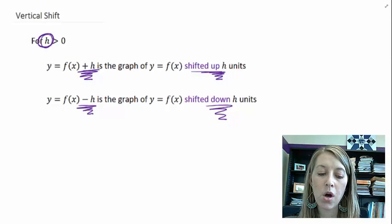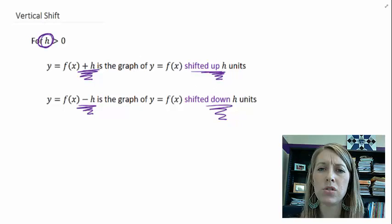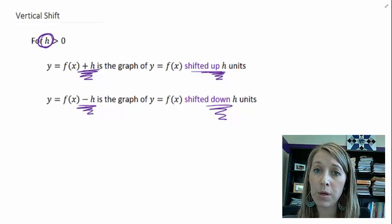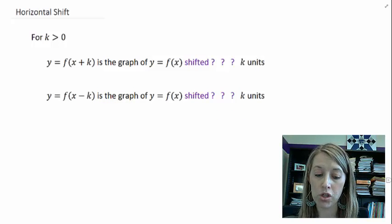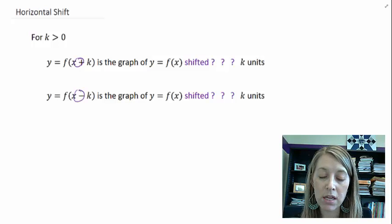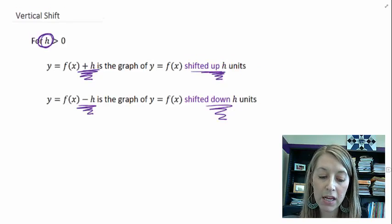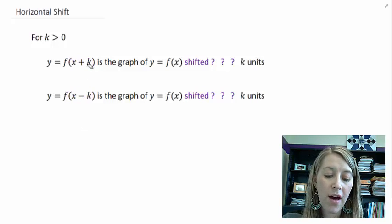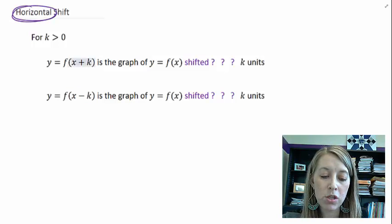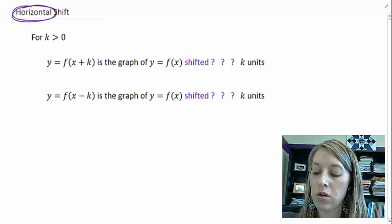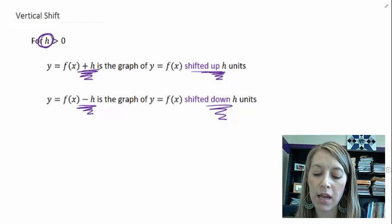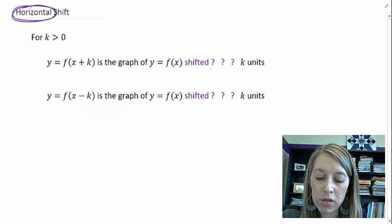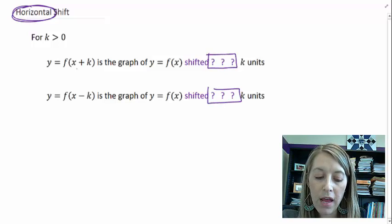Now, moving on to the horizontal shift. If adding or subtracting h outside the function shifts it up and down, how do we shift horizontally? It's still going to be addition and subtraction, but it's in a different location — inside the function. h was outside of f(x); here, k is inside f(x). So if we're adding and subtracting on the inside, that affects things horizontally. We need to figure out: if I add k, which way does it shift? If I subtract k, which way does it shift? Pause the video and see if you can fill in those blanks.